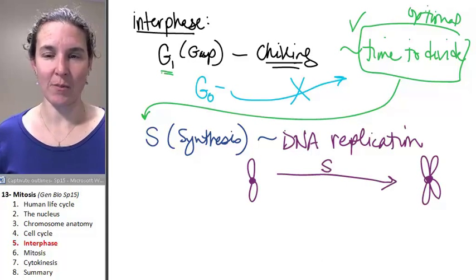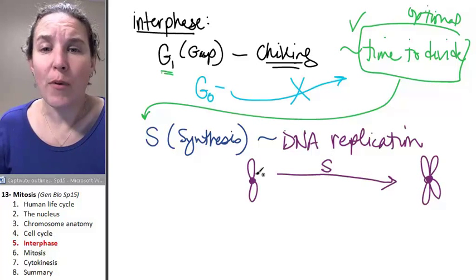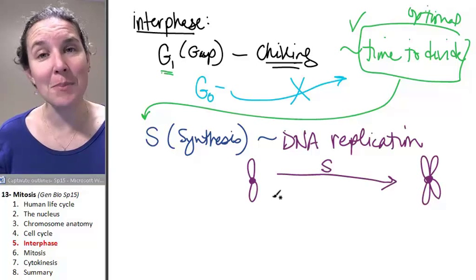Does that make sense to you? Of course, we get our sister chromatids. Before S, there's no sisters in this mix.